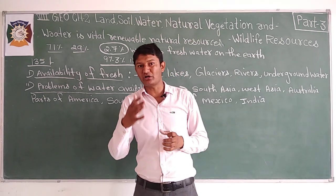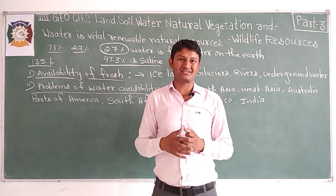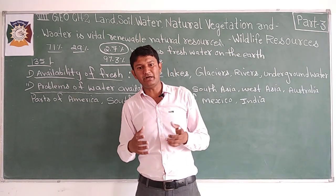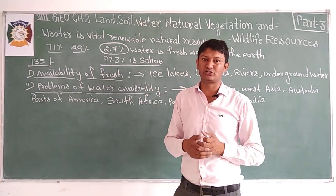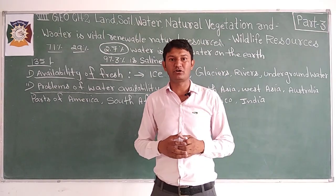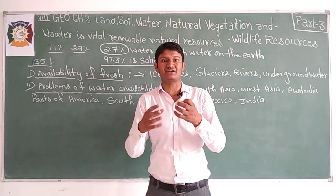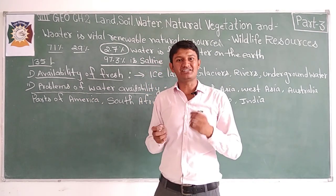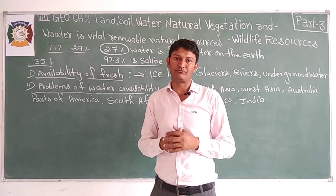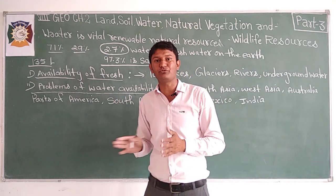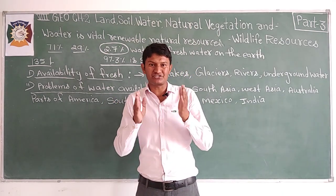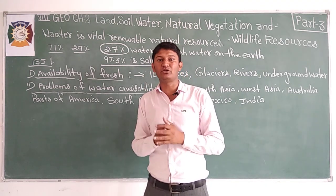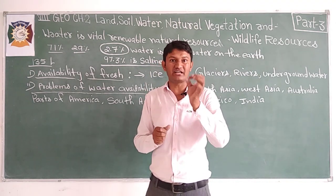Now you can understand the problem of water scarcity. It also depends on the density of rainfall. Some countries receive very little rainfall. Similarly, Rajasthan receives very less rainfall — some areas of India receive only 10 to 20 cm of rainfall, which is very very less.